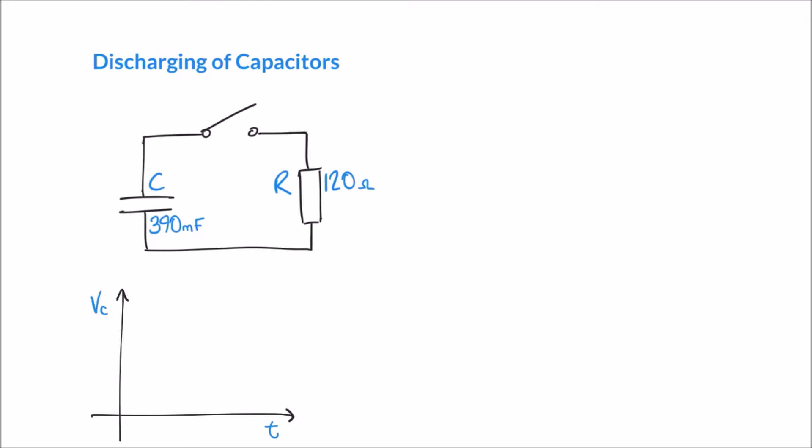Just like in our previous video, we're going to measure how the capacitor discharges by measuring the voltage across the capacitor, connecting a voltmeter across it. Below I've sketched a graph of VC, the voltage across the capacitor, against time. In our previous video we talked about how capacitors charge with a growth curve — a nonlinear shape with a sudden increase followed by a leveling off. With a discharging capacitor we see something called a decay curve: a sudden drop-off in voltage followed by a leveling off as we approach complete discharge.